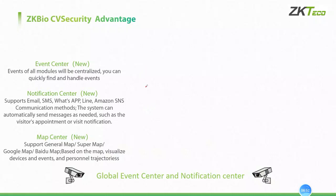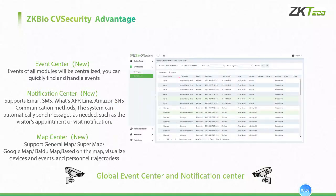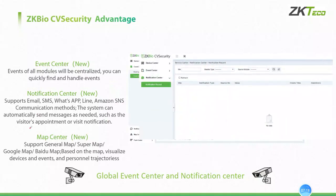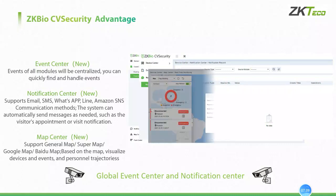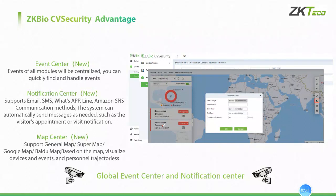We have also added the service center module, which mainly includes the event center, notification center, and map center. The event center means that all events from all modules will be centralized so you can quickly find and handle events. The notification center supports email, SMS, WhatsApp, LINE, Amazon SNS, and other communication methods. The system can automatically send messages as needed, such as visitor appointment or visit notifications. The map center now supports Amap, SuperMap, and Google Maps. Based on the map, we can visualize devices, events, and personal trajectories.